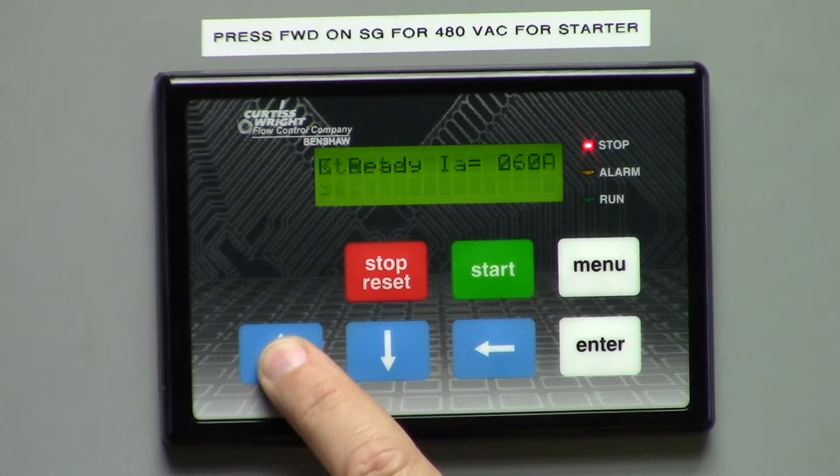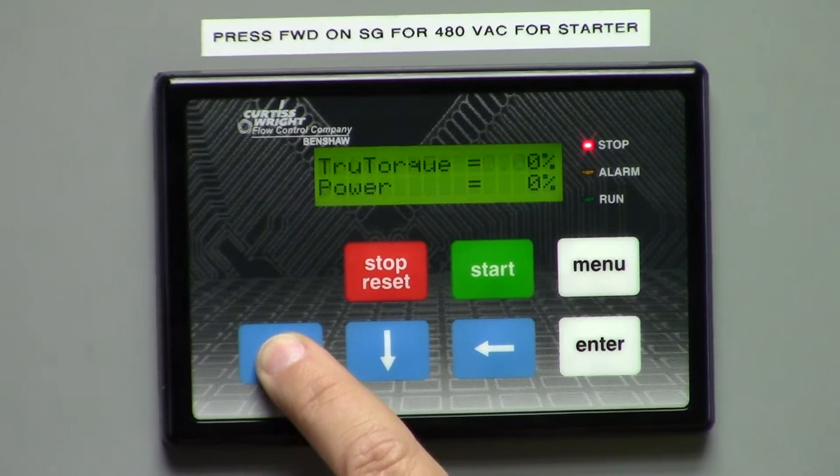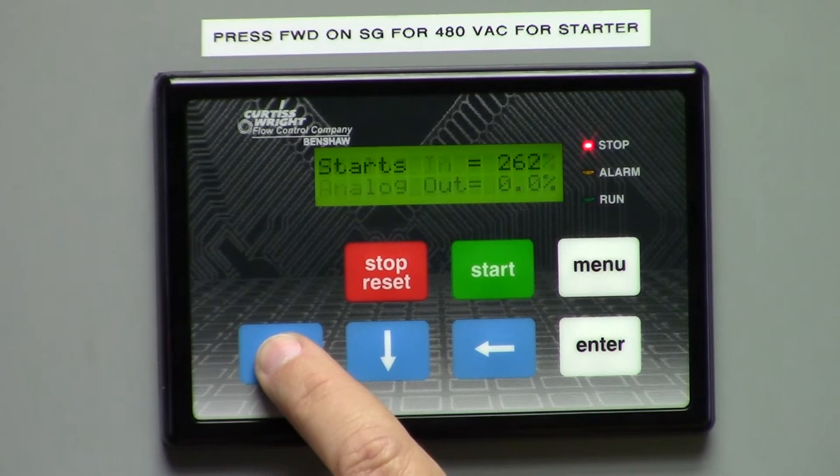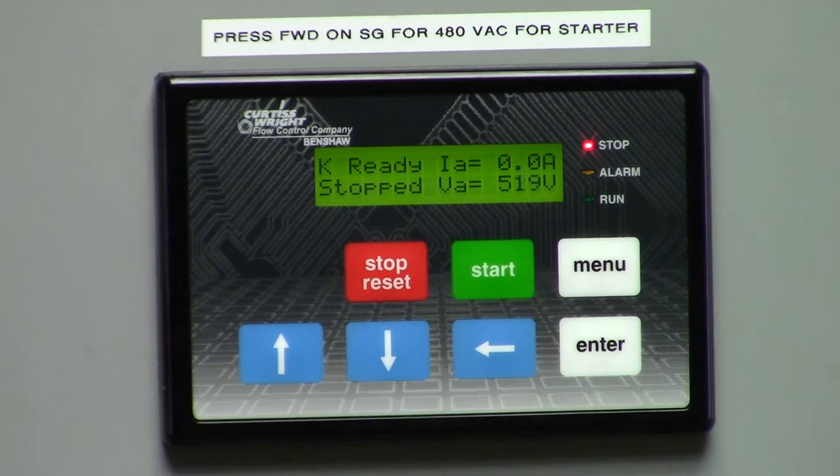As you keep pushing the buttons up or down, it'll go around in a loop, and eventually come back to the very beginning of the default screen, which is right there. So basically, it runs in a loop, and you can get a lot of information from that for troubleshooting purposes.